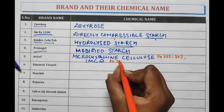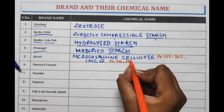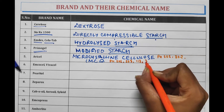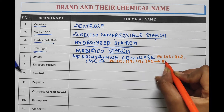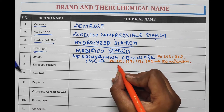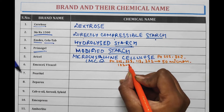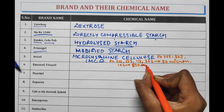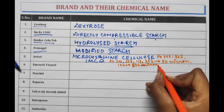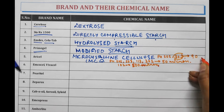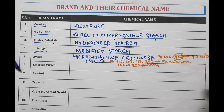PH 101, 103, 113, and 301 have a particle size range of 50 microns. PH 102 has a particle size range of 100 microns. PH 302 has a particle size range of 90 microns.